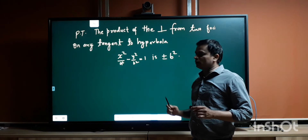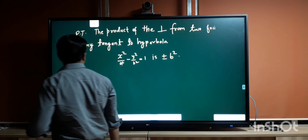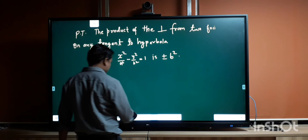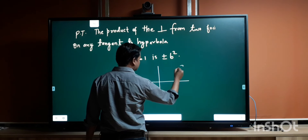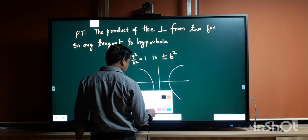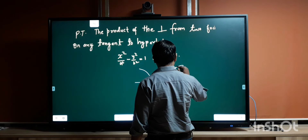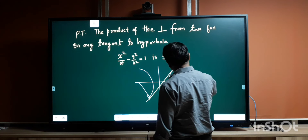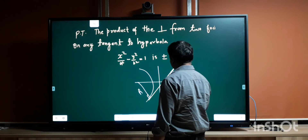Dear students, today we are going to prove a result from the topic of hyperbola. The result states: prove that the product of the perpendiculars from the two foci on any tangent to a hyperbola is equal to ±b². What it basically asks us to prove is that there is a hyperbola with two foci, there is a tangent, and we need to calculate the product p1 multiplied by p2.